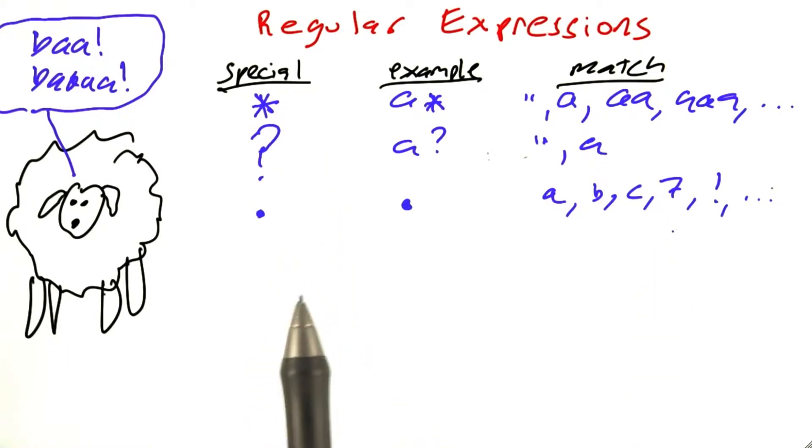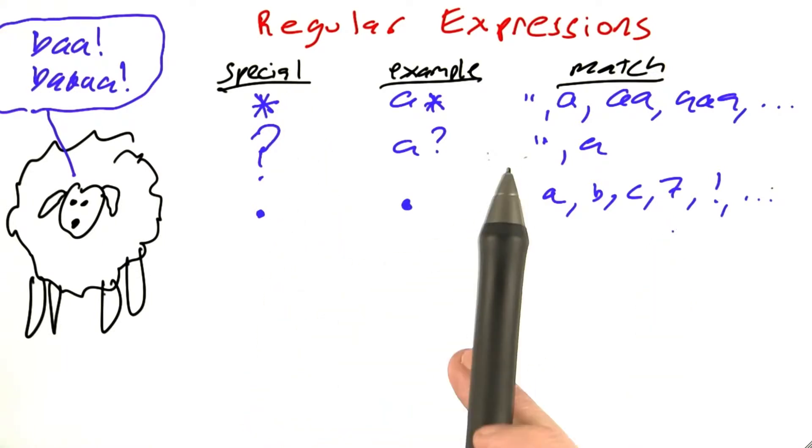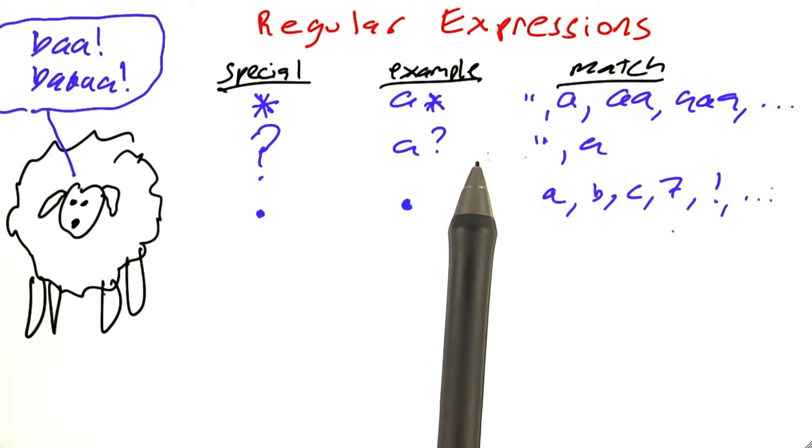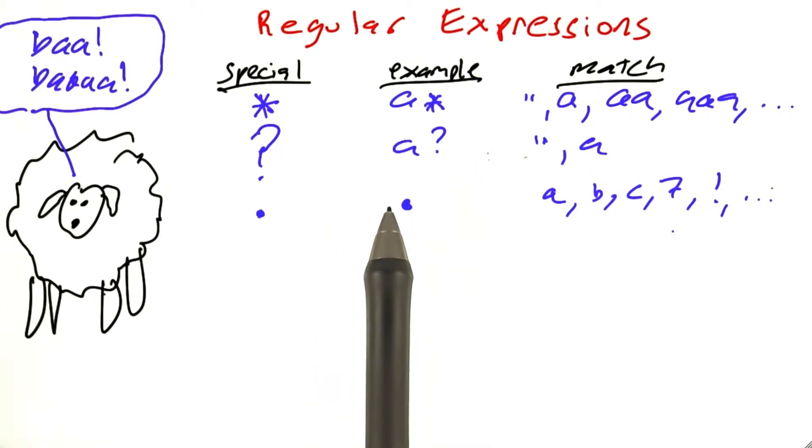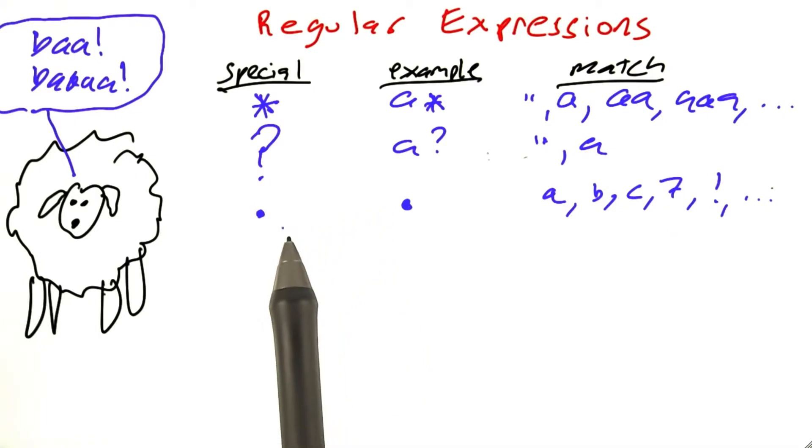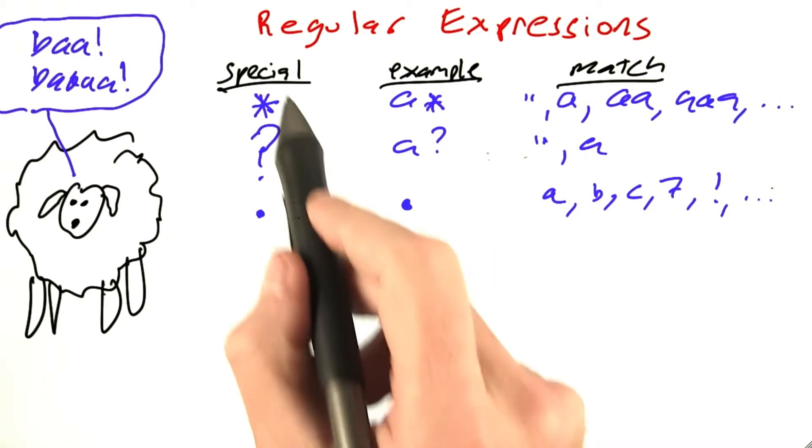We're almost done. There's only two more special characters in this subset of regular expressions that I want to talk about. Languages like Python have very complicated patterns that they can match against for regular expressions. Some of them go beyond regular to irregular expressions, but we're going to talk about a specific subset that we can write a program for to do regular expression matching, and it's only going to have five special characters. So these three,